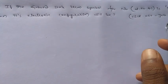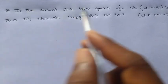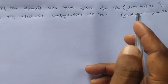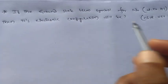This is Jiren JV. This question appeared in CSIR NET June 2013. The question is, if the ground state term symbol for niobium atomic number 41 is D6, then its electronic configuration will be.